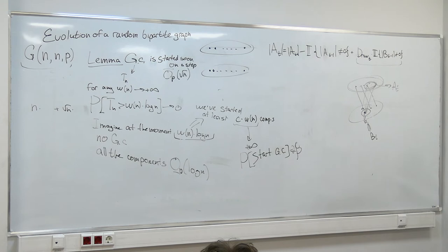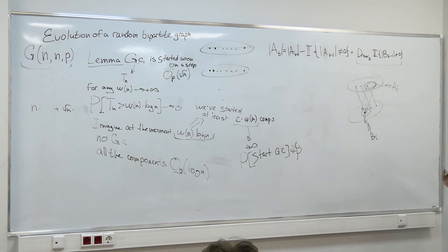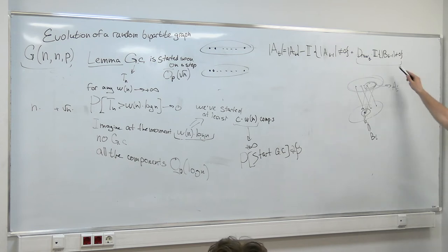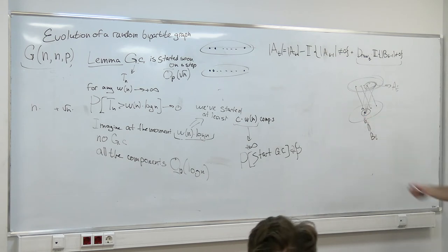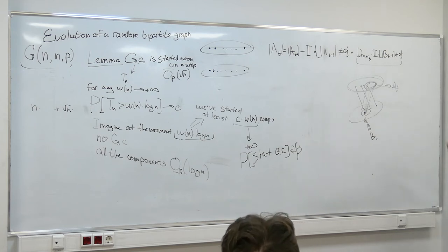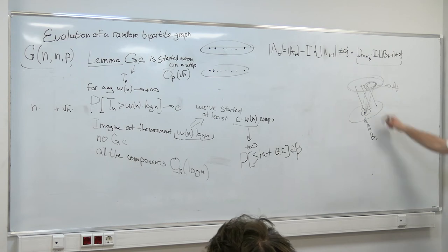X_t is just the set of nodes added to A_T on step t. We multiply by the indicator that there are some active nodes in the other part of the bipartite graph. If we don't have any active vertices in the other part, then we draw nothing.